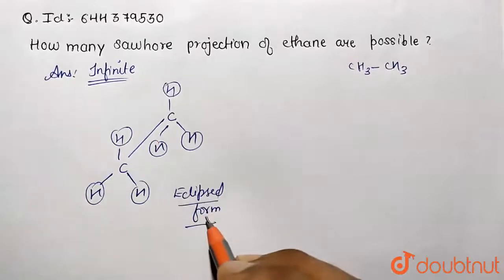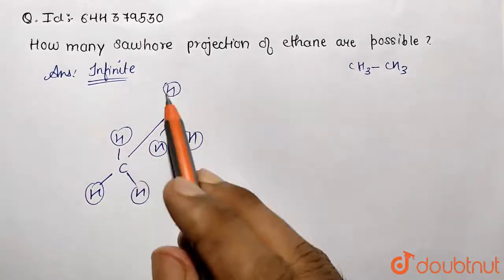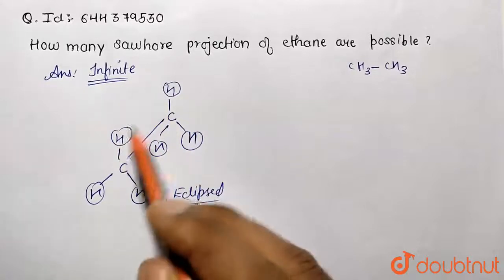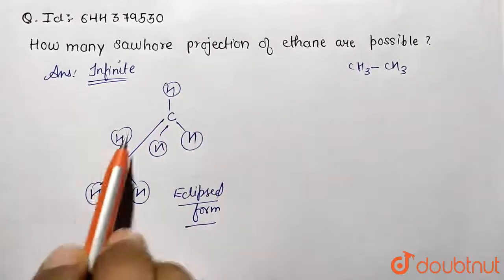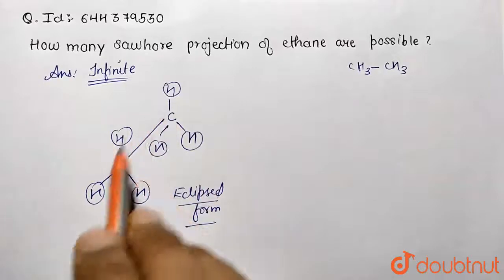So some of the common forms we are going to see: Eclipsed form, when they are going to be exactly opposite. So H is being superimposed with H when we are seeing from the front. So this is occupying the same position.